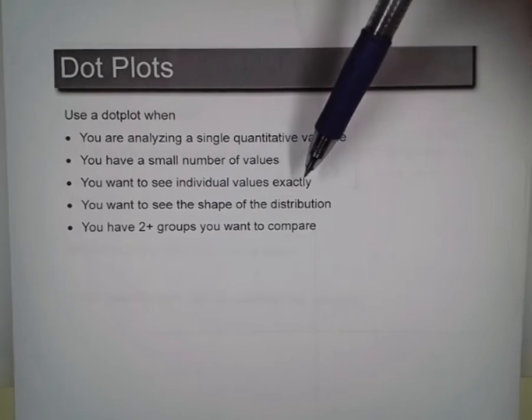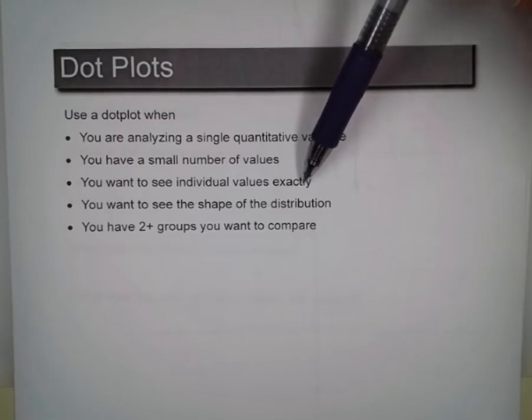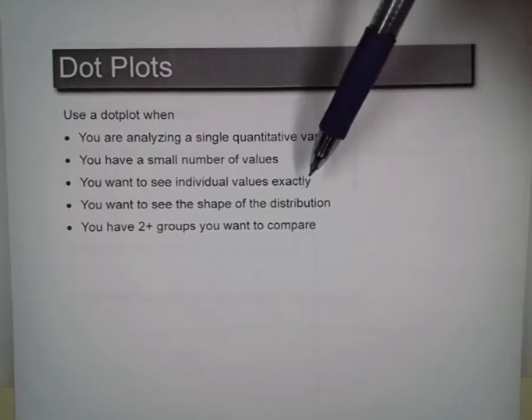With a dot plot, you want to see the individual values exactly. That means you can actually look and pinpoint every single data point and know exactly what the value is. Dot plots, you can do that. With others, you can't.